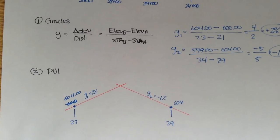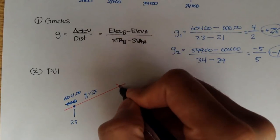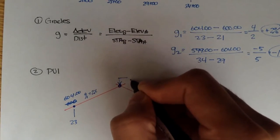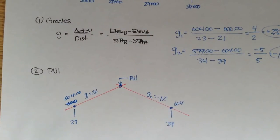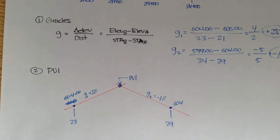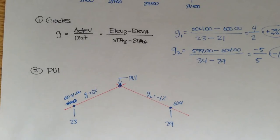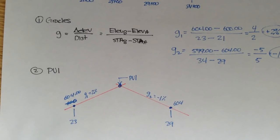A couple of things to note about PVI: the PVI, or point of vertical intersection, is where the two grades intersect. A good note to keep in mind is that the PVI is located at the middle of a vertical curve — for simple vertical curves, it's at the middle. But a PVI is not located at the highest point of the curve, or the lowest point if you have a sag. Here we have a crest vertical curve.